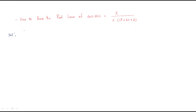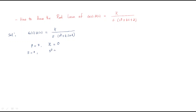First, write the given data: G(s)H(s) = K / [s(s² + 2s + 2)]. How many poles do we have? We have s multiplied by the quadratic, so it gives s³, meaning number of poles is 3. Number of zeros: if you observe, there are no zeros, so zeros = 0. First pole is s = 0.